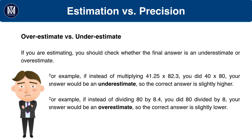Likewise, if instead of dividing 80 by 8.4 you did 80 divided by 8, your answer would be an overestimate, so the correct answer is slightly lower. Watch out for division, because if you've gone from 8.4 to 8, it actually leads to an overestimate — not an underestimate as it does for multiplication.